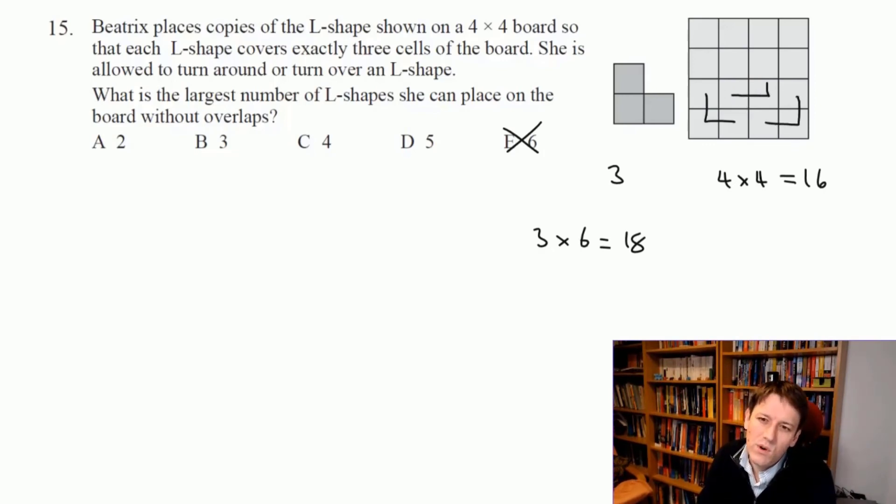Actually, I think if I want to be efficient I want to try and not block off squares. So I might try putting an L around here and then one here. Now I've used up the whole of the bottom half. Now I can put one here without leaving any gaps, and then I can put another one in here somehow.